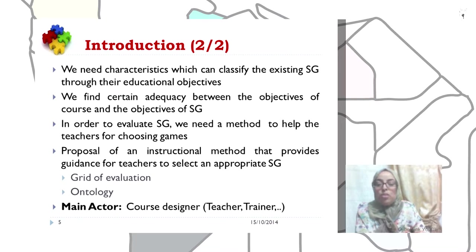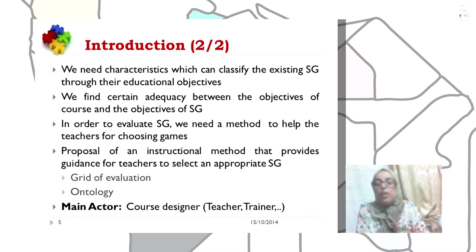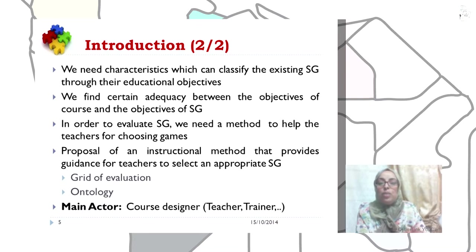The first step consists of defining the grid of evaluation, and the second step consists of defining the ontology of educational objectives. The course designer is our main actor.